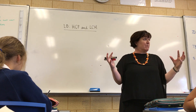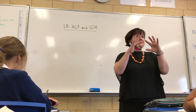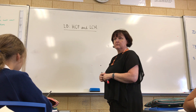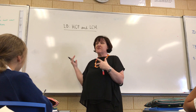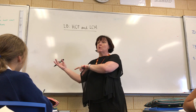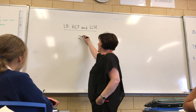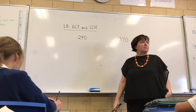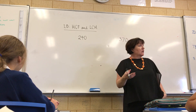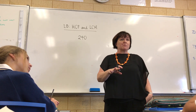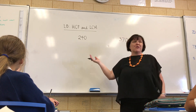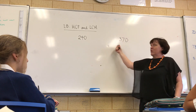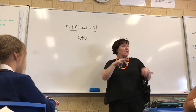Now, if we have bigger numbers, the way we find the prime factors is by using the factor tree like we did yesterday. If you have big numbers, is there an easy way to find just factors, not prime factors? Not really — you'd have to list them. So this is why we do it with the factor tree, because the prime factors help us with more things. So let's have 240 and 370.